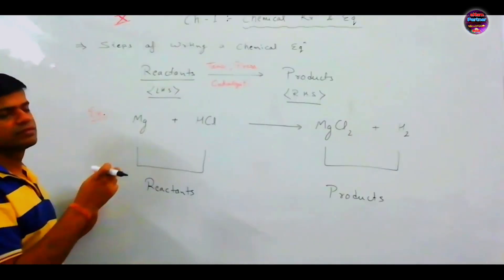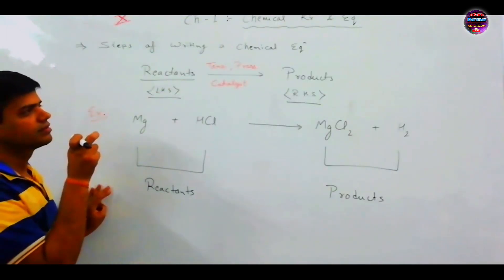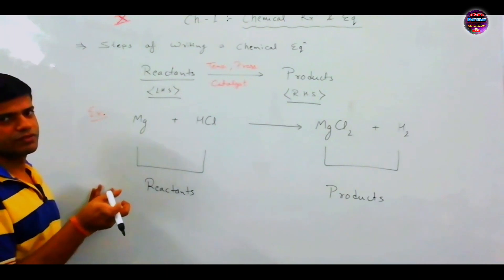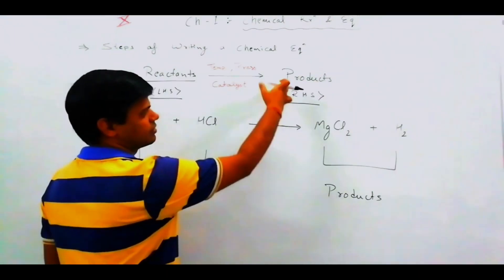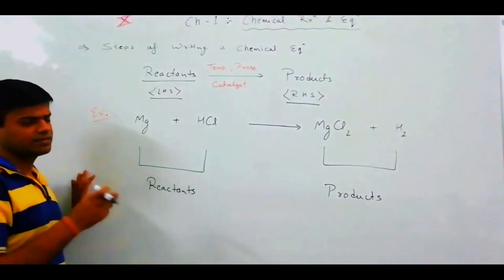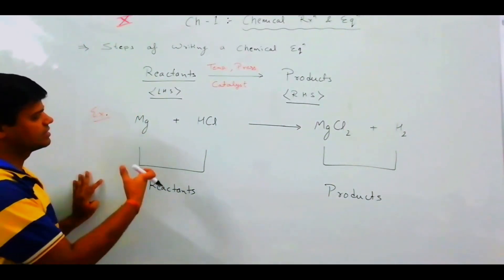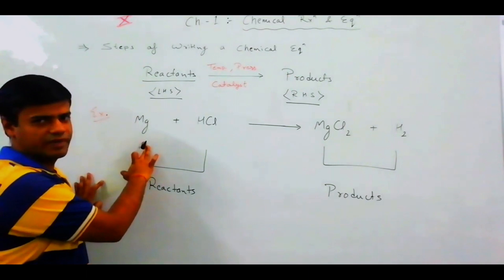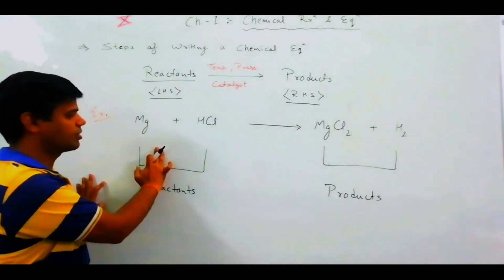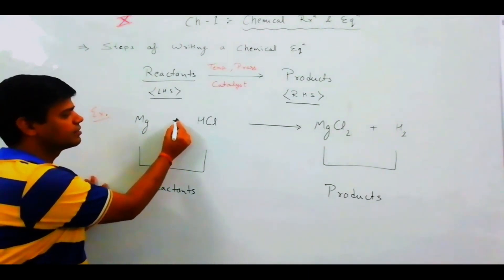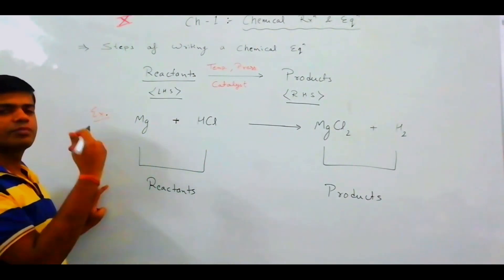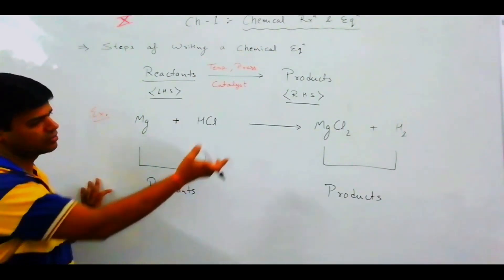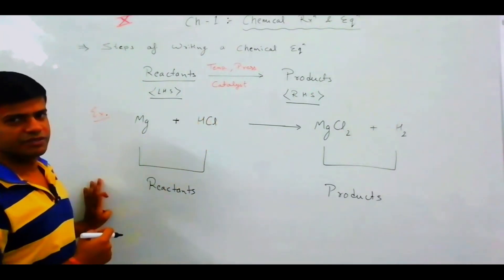Second step, the same, symbols. The problem will not be the products on RHS side. Next, third step, if you have two or more products, positive sign use karenge, between reactants. Same, if products are also two or more, between them also positive sign.